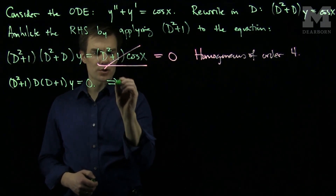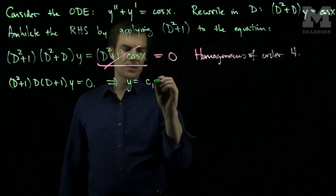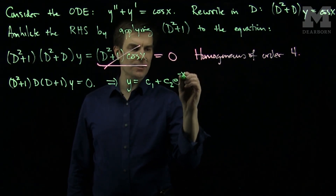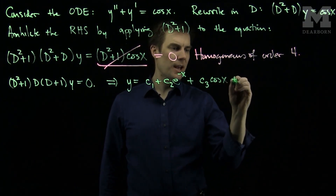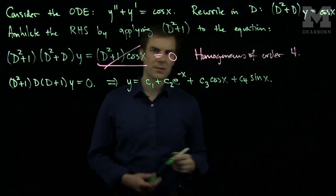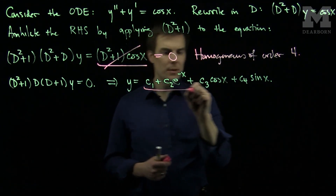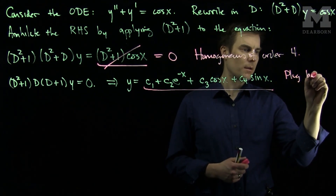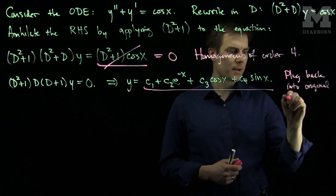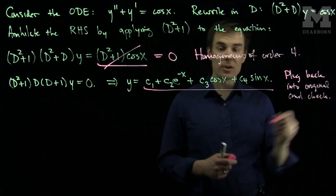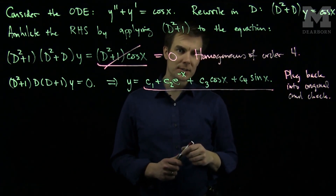The solution of this homogeneous ODE is y equals c₁ — because D annihilates the constant c₁ — plus c₂e^(−x) from the D(D+1) factor, plus c₃cos(x) and c₄sin(x). Now we know there should only be two arbitrary constants in a second order ODE, and we have four constants in this solution.